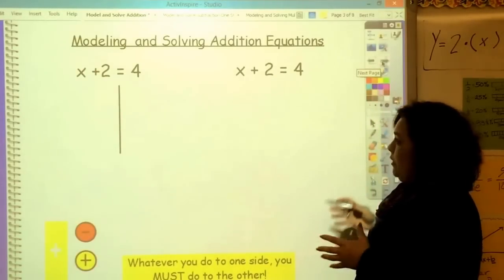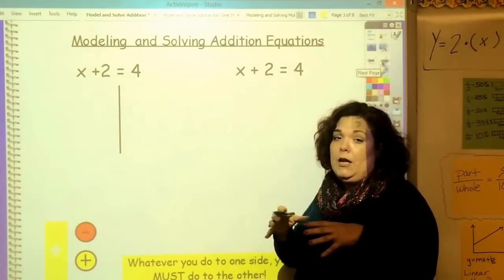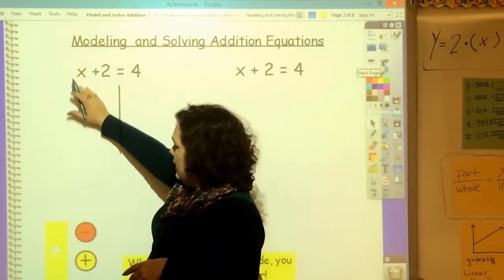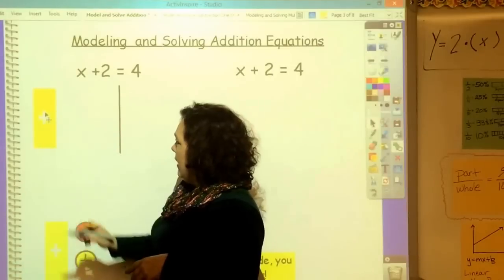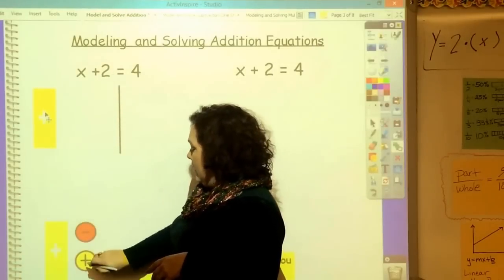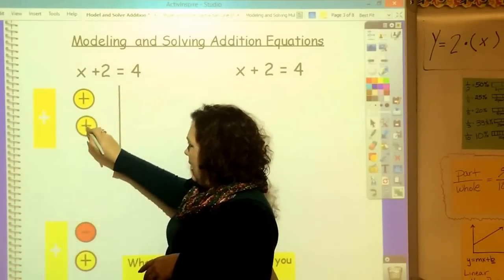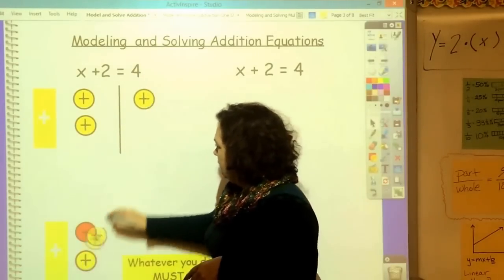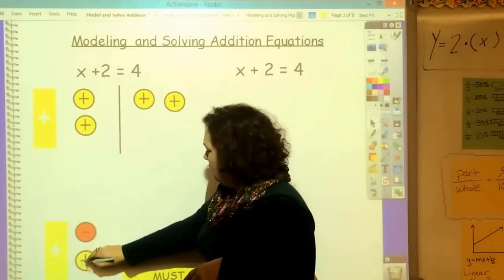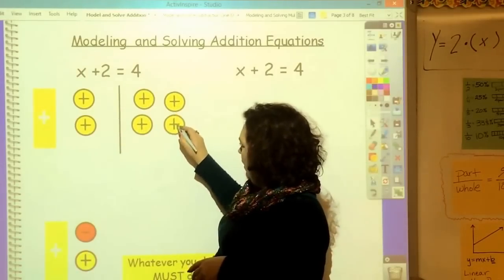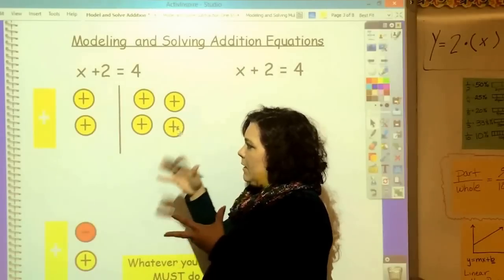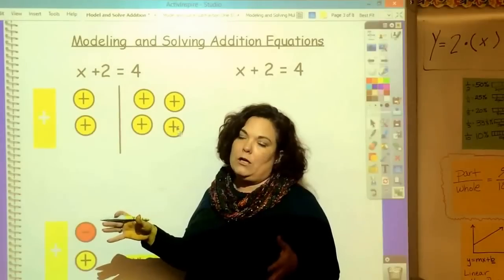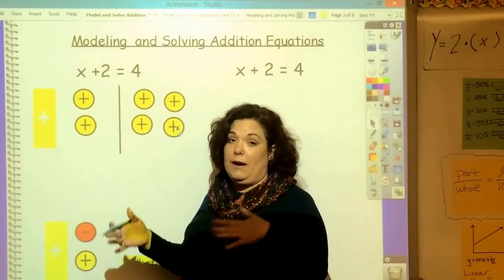First, we're going to go through and do all of the models so that you can understand pictorially what is going on. I have x here, and x is represented by this bar. I've got plus 2, so those are positive 2. And that equals 4 on this side. This is my equation. You can probably look at it and say, of course, 2 plus 2 equals 4. But these are going to get very complicated, so you need to know how this works.